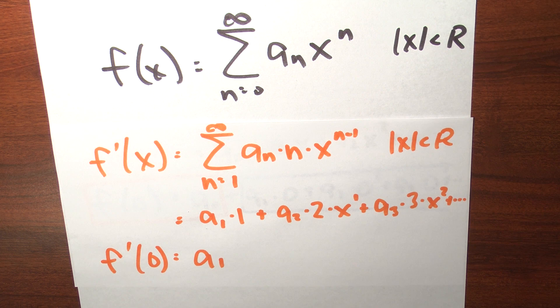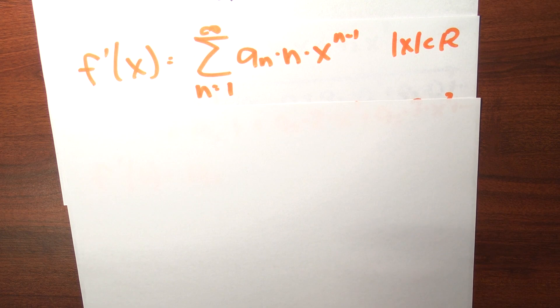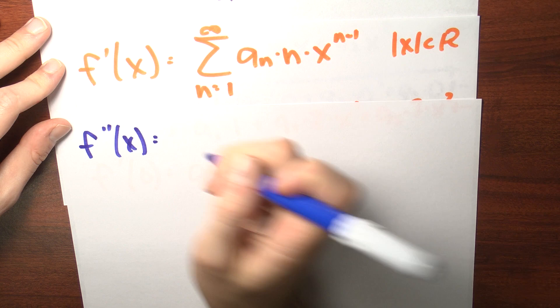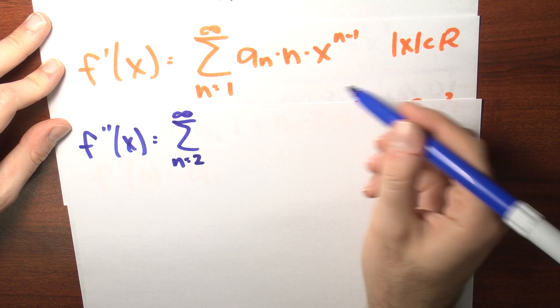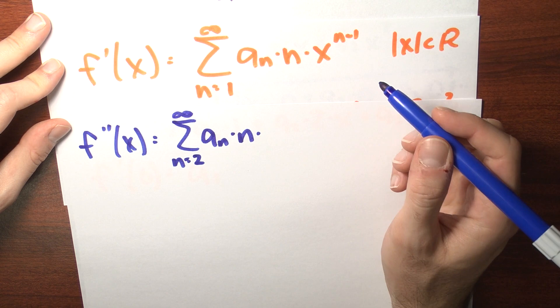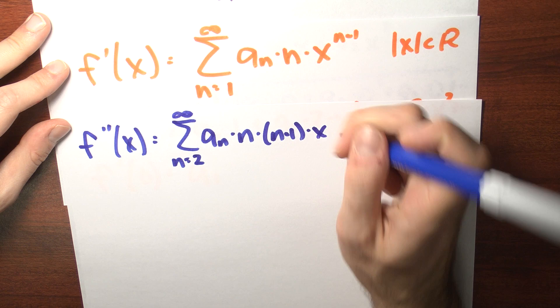I can just keep on doing this. The coefficient in front of x squared, a sub 2, can be calculated in terms of the second derivative of f. Let me differentiate again to get a power series representation for the second derivative of f. So f double prime is the term by term derivative of this power series, which is the sum n goes from 2 to infinity of a sub n times n times n minus 1 times x to the n minus 2, valid at least when the absolute value of x is less than r.